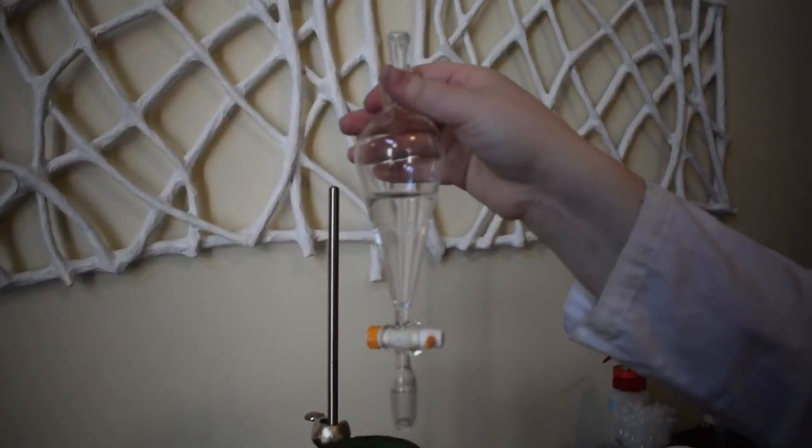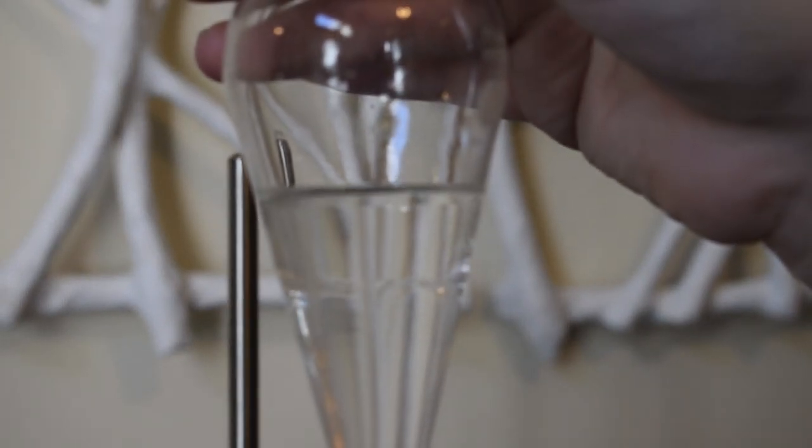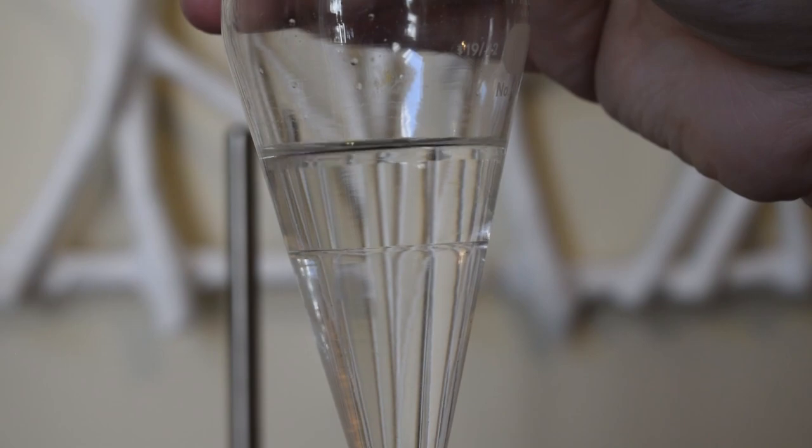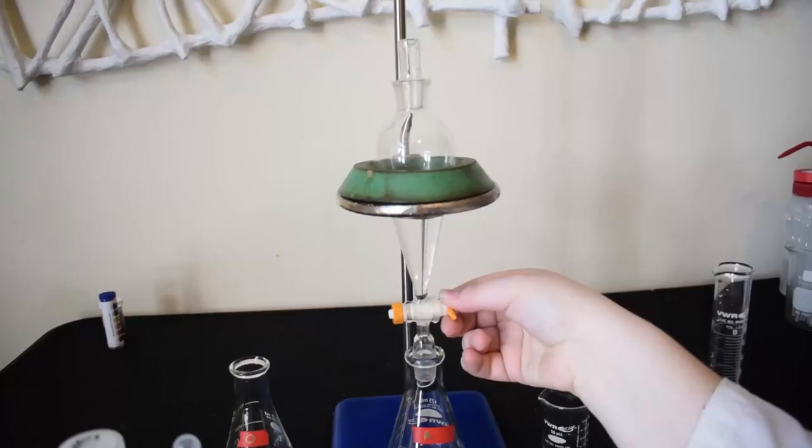Once that's done, we are putting it back in the ring stand. As you can see, there should be two distinct layers forming. The top layer is ethyl acetate, our organic layer, and the bottom layer is water, which is our aqueous layer.